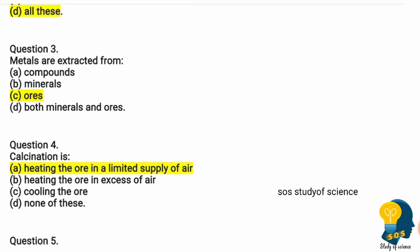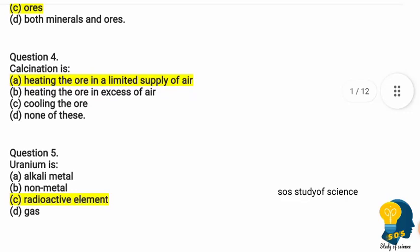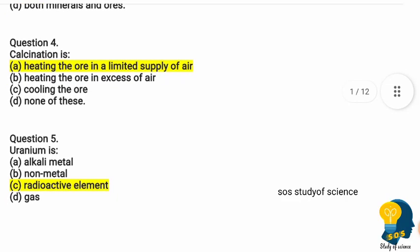Question four: calcination is — option A heating the ore in the limited supply of air, option B heating the ore in excess of air, option C cooling the ore, option D none of these. The correct option is heating the ore in the limited supply of air.